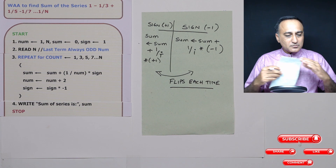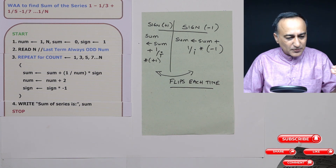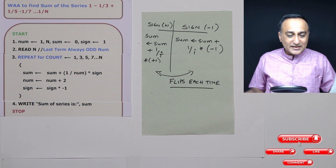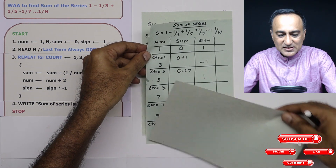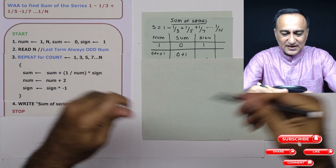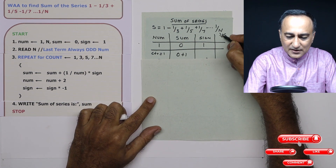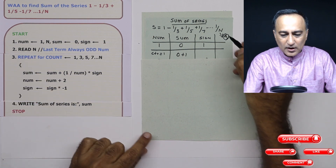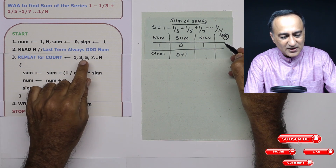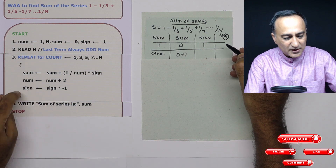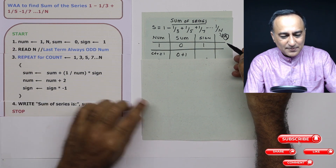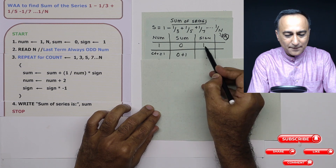To understand this clearly, we will build a trace table and run through the logic — that is the easiest and most accurate way to verify the algorithm. Here is the series. Assume n equals nine. In step two, the denominator n is nine, so the repeat-for-count loop runs for count = 1, 3, 5, 7, 9 — that means the block executes five times. At step one, number = 1, sum = 0, sign = 1.